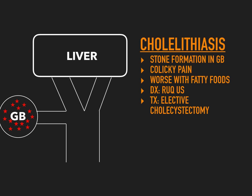To summarize cholelithiasis: stones form in the gallbladder from either cholesterol supersaturation or hemolysis. The patient classically has right upper quadrant colicky pain and usually no fever or systemic signs. You diagnose it with a right upper quadrant ultrasound because it's cheap and non-invasive, and you do an elective cholecystectomy because it's not seriously life-threatening.